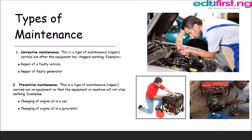Let's move on to the types of maintenance. The first type is corrective maintenance. This is a type of maintenance carried out after equipment has stopped working. Examples are repair of a faulty vehicle — the vehicle has developed a fault and can no longer serve its purpose, so we bring in a technician to fix it — and repair of a faulty generator, because once the generator is bad, we can no longer use it. That is corrective maintenance; the equipment cannot be used until it is repaired.